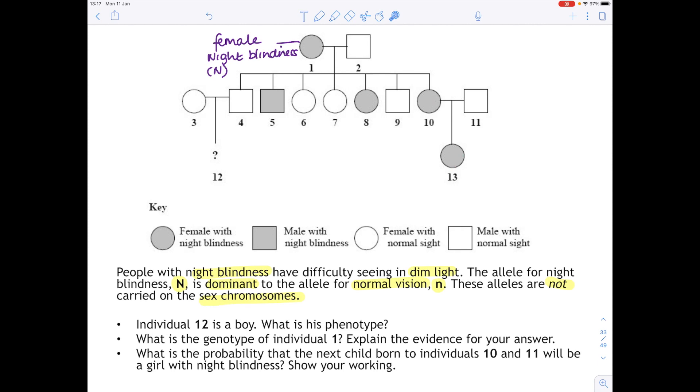So individual 12 is a boy. What is his phenotype? Make sure you remember that the phenotype is the physical appearance. We're looking at this individual here. Because we know that night blindness is caused by a dominant allele, it makes sense therefore that both of these must be normal, meaning that there's no way that individual 12 can have night blindness. So we're going to say that they have normal vision because remember we're looking at the physical appearance.